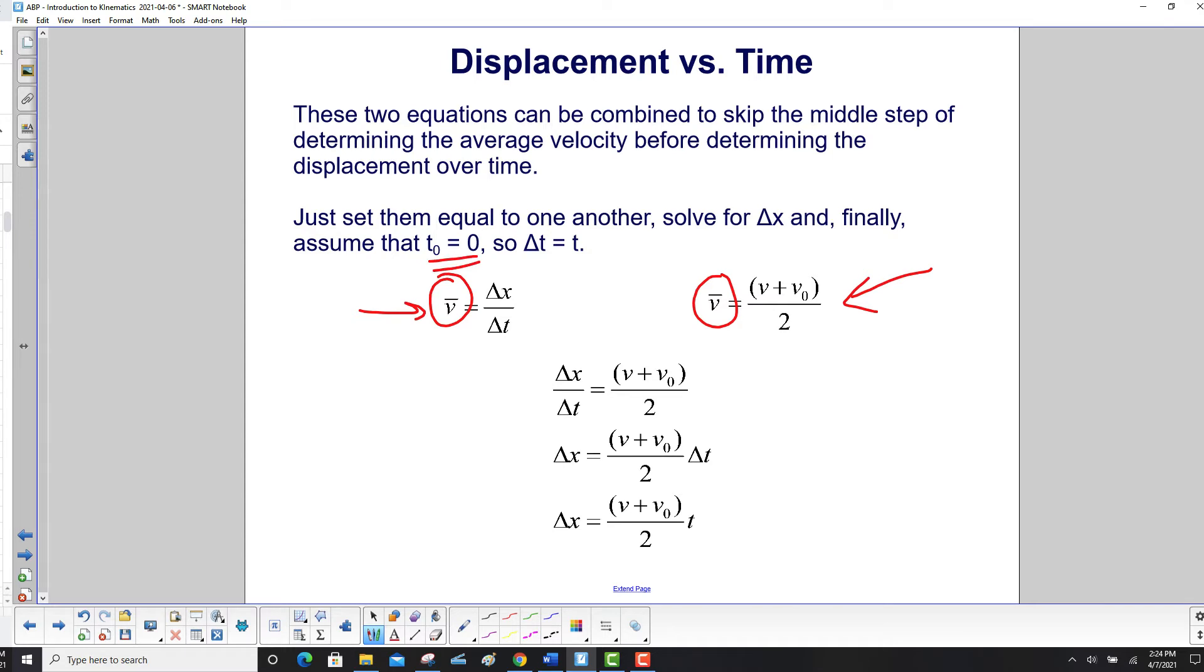That's a pretty typical assumption. We start the clock at time equals zero. That means Δt will equal t. So here we bring this one down here, Δx over t. And here's v plus v₀ over two. Set them equal to each other.